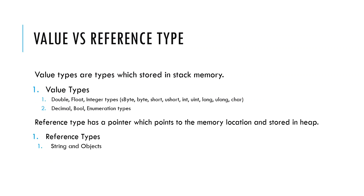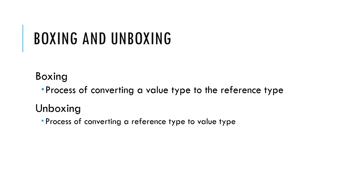What is the difference between value type and reference type? Value types are stored in stack memory. Examples of value types include int, float, double, and so on. Reference types act like pointers which point to a memory location and are stored in heap memory. Examples of reference types include strings and objects.